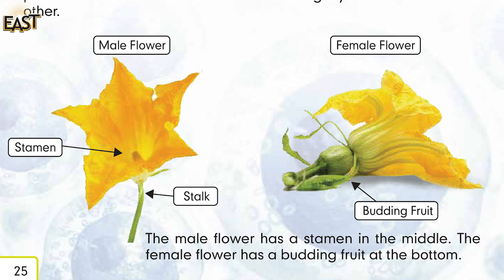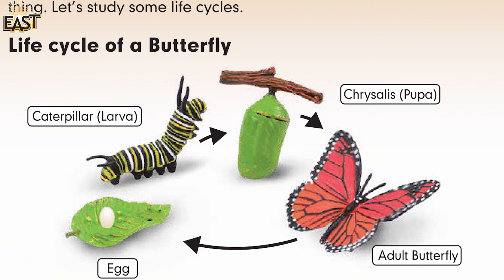The female flower has a budding fruit at the bottom. A maize plant has a male flower head on the top and female flower heads on the stem. The corn is part of the female flower. On the next page we have life cycles of different animals like butterfly, cockroach, and mosquito.